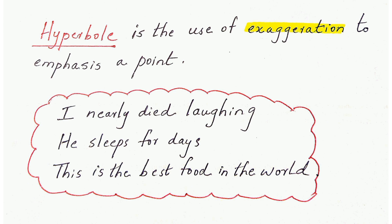Hyperbole is exactly the opposite of understatement — here we are exaggerating. Instead of simply stating what happened, we emphasize it with extreme gravity. Examples: 'I nearly died of laughing' — you can't die just from laughing. 'He sleeps for days' — he might sleep for hours but we exaggerate. 'This is the best food in the world' — you haven't eaten everything in the world. So exaggeration is hyperbole, whereas understatement gives the situation less importance than it deserves.